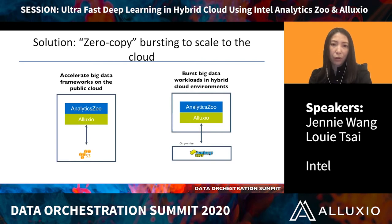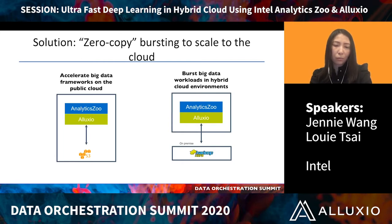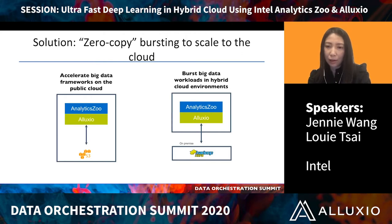In our solution, we deploy in two scenarios. The first scenario is that the Analytics Zoo and Alluxio cluster is in the public cloud, and the storage is also in the public cloud but in a different data center. Analytics Zoo accesses data through Alluxio, which provides acceleration of data loading. The second scenario is that Analytics Zoo and Alluxio are deployed in the cloud environment, but the data storage — the Hadoop system — is an on-premises cluster. Using Alluxio, Analytics Zoo can get data which improves loading performance.